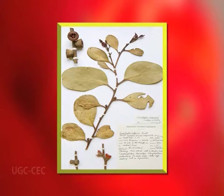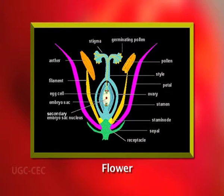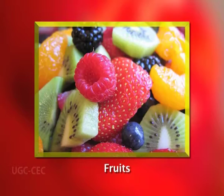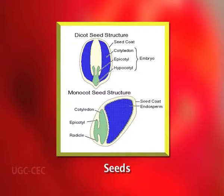Most of the prominent herbaria of the world are arranged according to this system. In this system, the families were arranged as per the increasing complexity of the flower, fruit, and seed development.